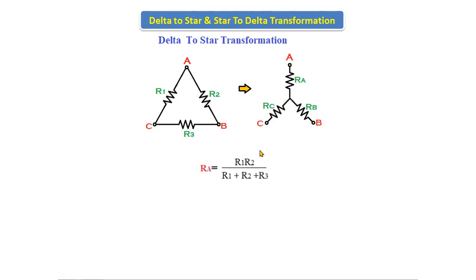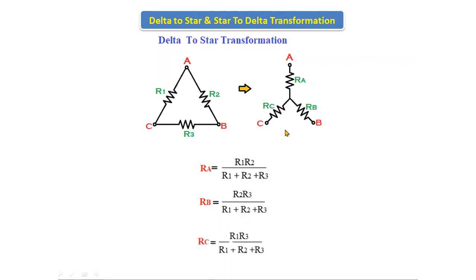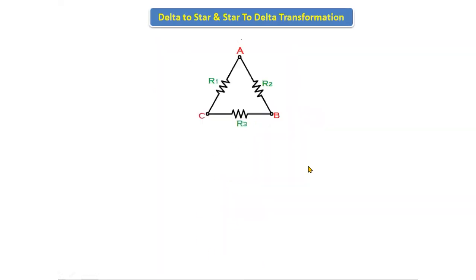If you want to convert delta to star, these formulas are used. To find Ra, use R1·R2 divided by (R1 + R2 + R3). To find Rb, the formula is R2·R3 divided by (R1 + R2 + R3). To find Rc, use R1·R3 divided by (R1 + R2 + R3). These are the three formulas to find Ra, Rb, and Rc.